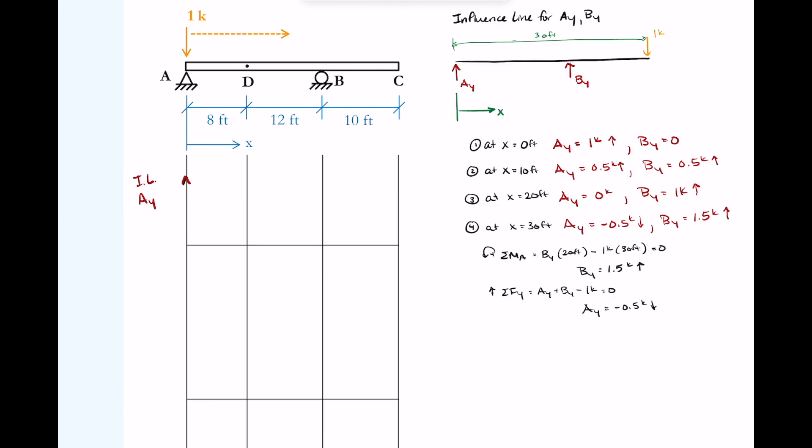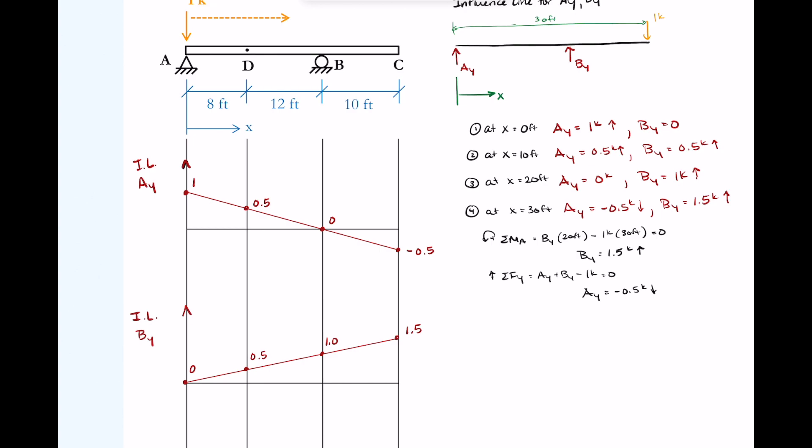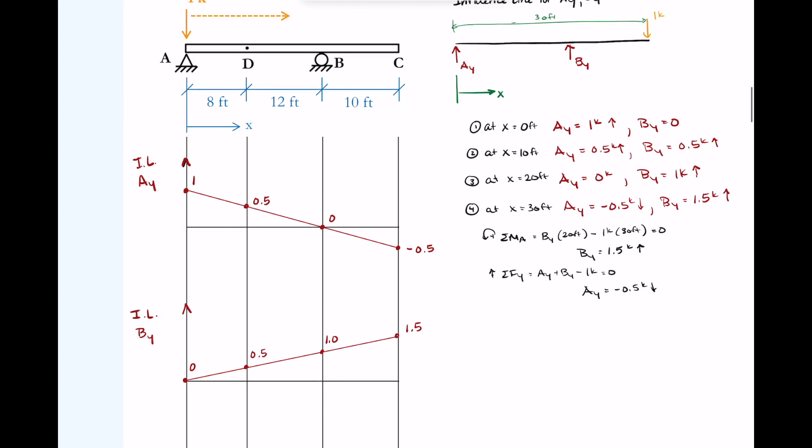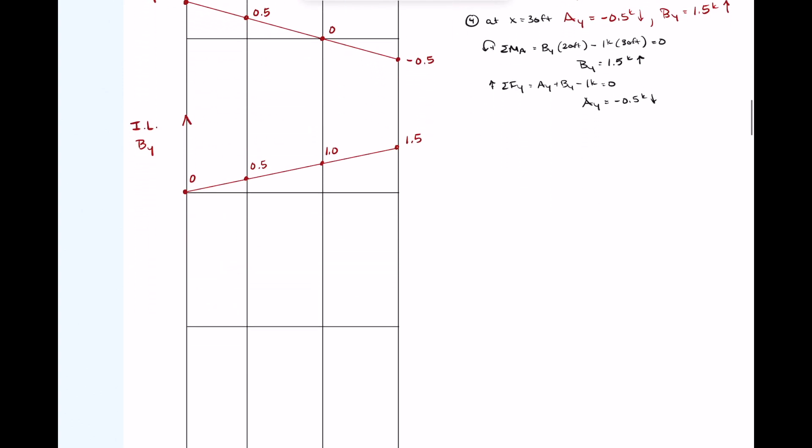Now with these values for AY and BY, I'm ready to plot the influence line. At x equals zero, AY is one. I know at halfway between points A and B, it's going to be 0.5, then zero, then 0.5. I do want to note here in this video, I made a mistake. That 0.5 is drawn as if it's at point D, but it's not at point D. It's at x equals 10 feet. Later in this video, we'll be coming back up and I'll be moving it. Just make a note that that is wrong.